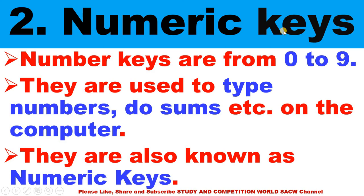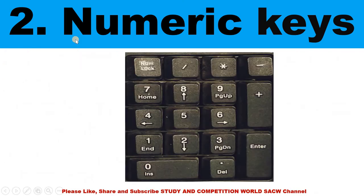Second, numeric keys. What are numeric keys? Numeric keys are from 0 to 9. They are used to type numbers, do sums, etc. on the computer. They are also known as numeric keys. These are numeric keys — 0, 1, 2, 3, 4, 5, 6, 7, 8, 9. If you want to type any number on the computer, then you will use these keys.